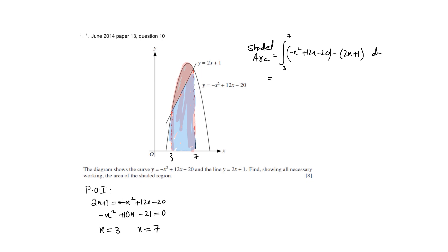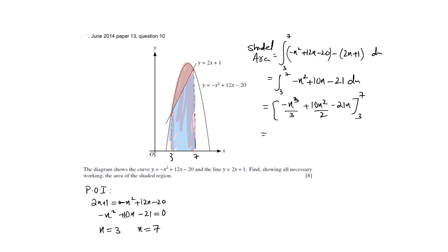Simplifying the expression gives minus x squared plus 10x minus 21 dx. Now integrate: x cubed over 3 plus 10x squared over 2 minus 21x, with upper limit 7 and lower limit 3. Placing in the upper limit gives negative 49 over 3, minus the answer from the lower limit. The resulting area comes out to be 32 over 3, which is 10 and 2 over 3 unit squared. That's the area of the shaded region.